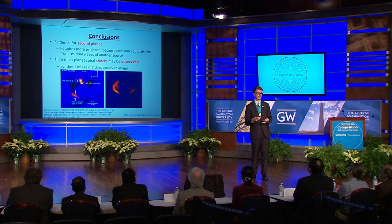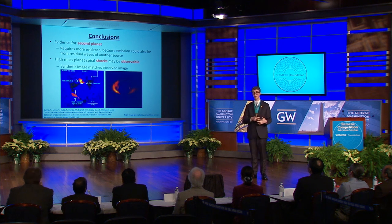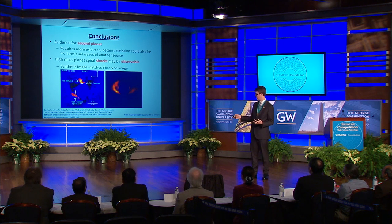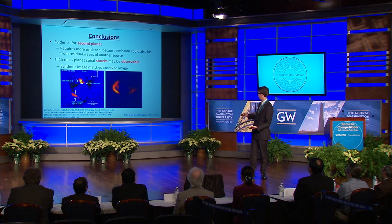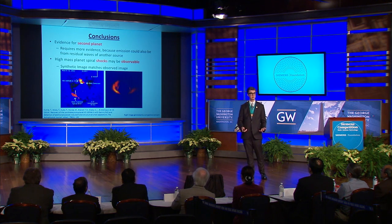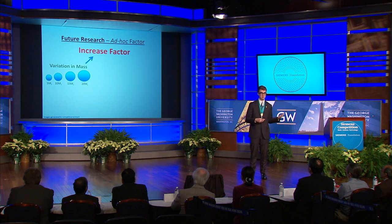This study acted as a pilot study for future observations of high-mass planet spiral shocks and translating theory into observation. It provides preliminary evidence for a second planet in the HD 100546 system, whereas the first one, HD 100546 b, is already known. However, this requires much more validation and confirmation, as this is not yet a validated method for finding planets. More importantly, it suggests that high-mass planet spiral shocks may be observable — when we include scattering, there's a clear spiral feature that we see.